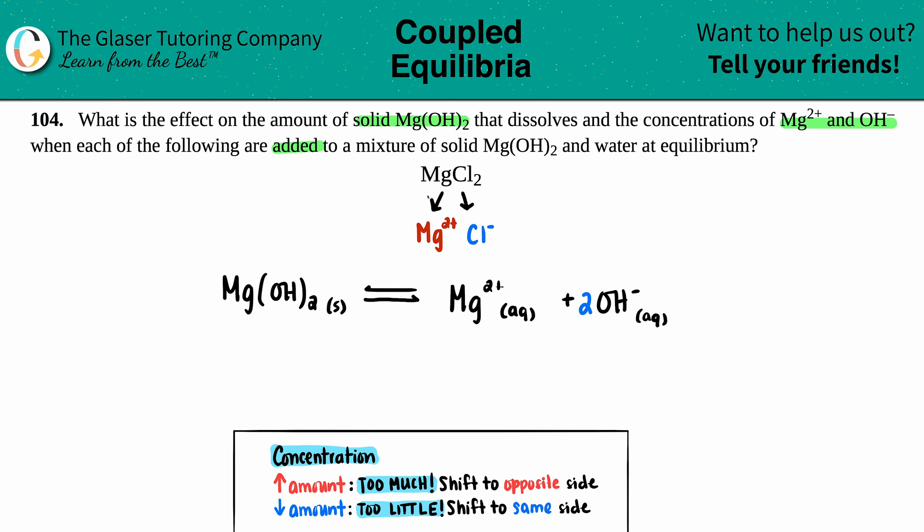Now, the thing is, do any of these ions match this compound? Because that's how equilibrium shifts are going to happen. And in this case, we have a match. Mg2+ goes right here.